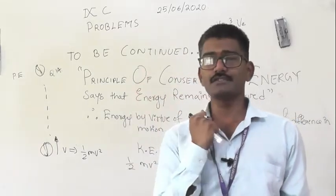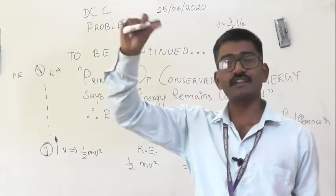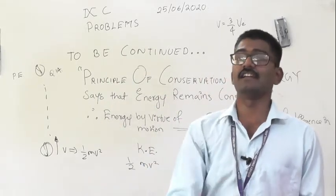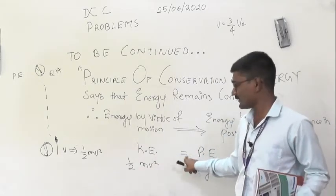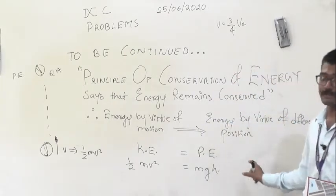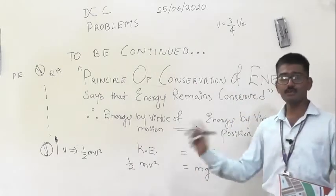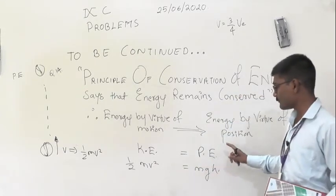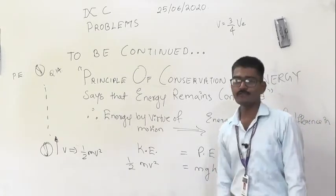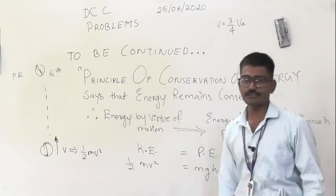Whatever energy you throw with gives the body velocity, and as it rises to the top position that energy remains in the body as potential energy — both values must be equal. This gives us an equation. The formula for kinetic energy is ½mv² and for potential energy is mgh. We have used these directly here. Many of you must already know these formulas. Both are set equal: ½mv² = mgh.